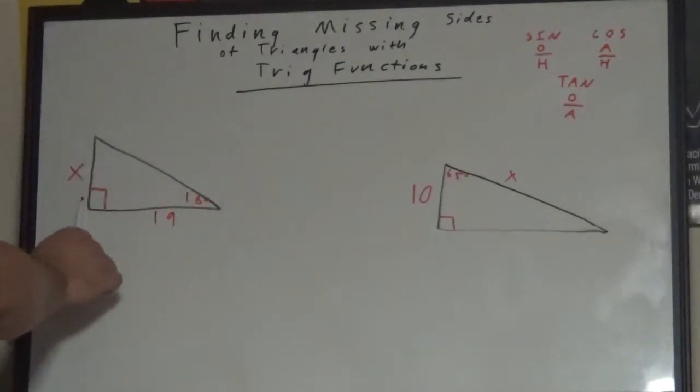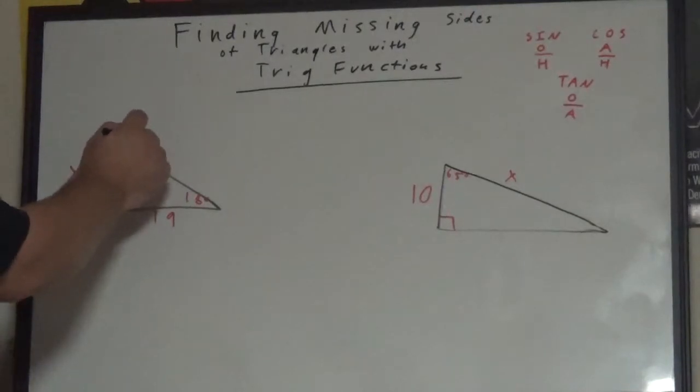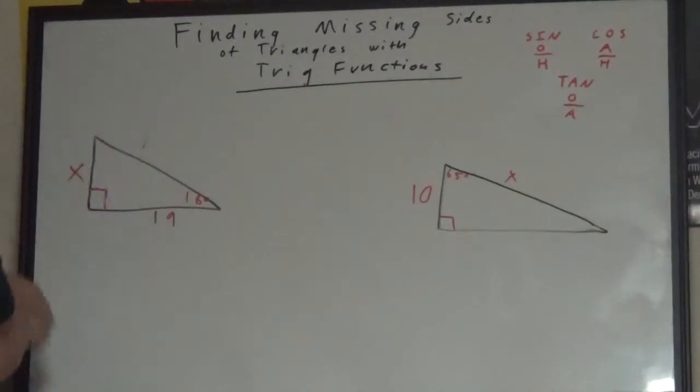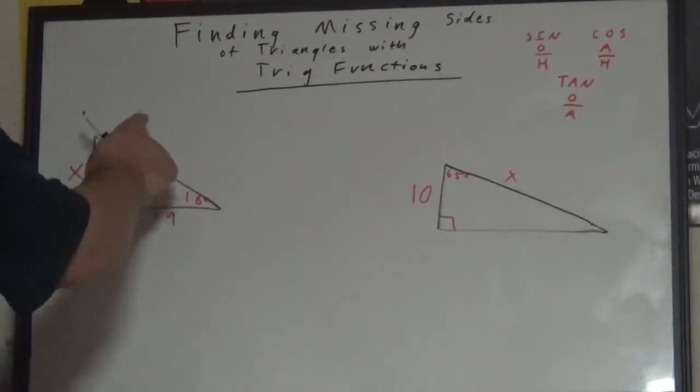and the side not touching it. So, you see in this triangle, these two sides are coming out of or touching the right angle. This side is not. Therefore, this side, I'm going to use a better marker, this side is the hypotenuse.